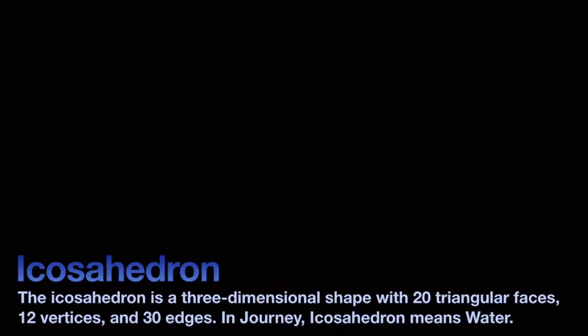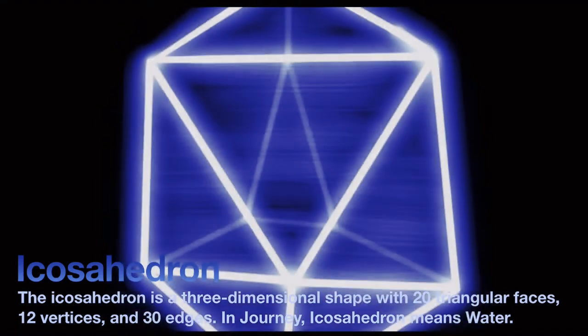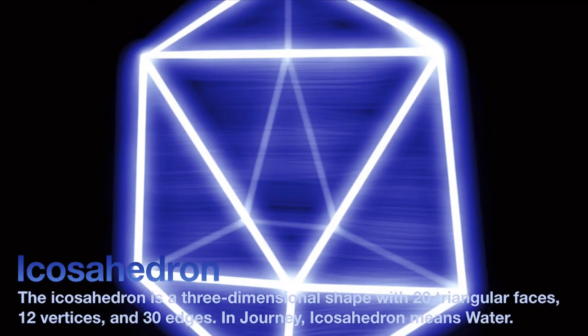The icosahedron is a three-dimensional shape with twenty triangular faces, twelve vertices, and thirty edges. In Journey, icosahedron means Water.